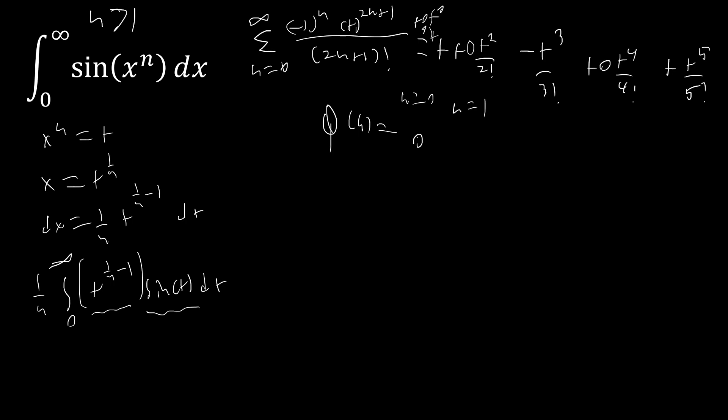We need a function that takes on the values 0, −1, 0, 1 and continues infinitely. That function is sin(−πn/2), or equivalently −sin(πn/2). You can check that those values match. Now we plug this into our formula.